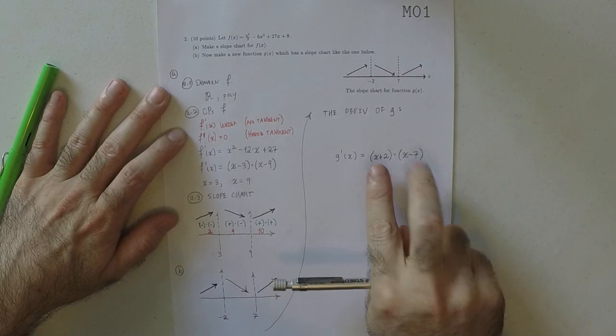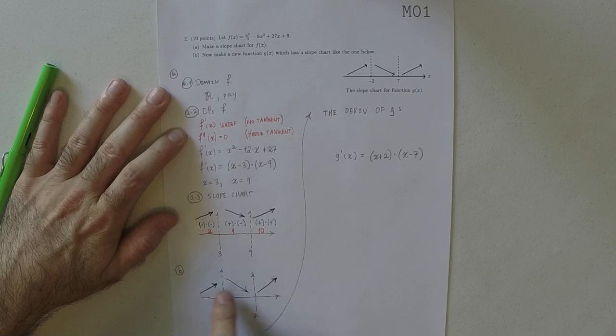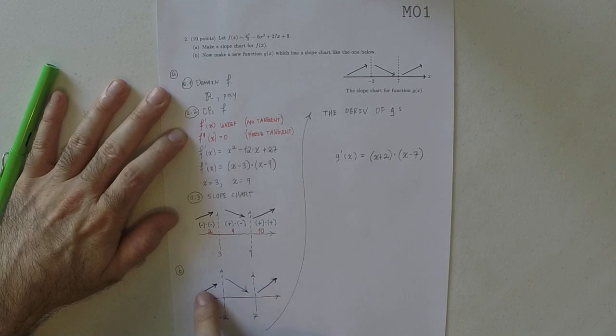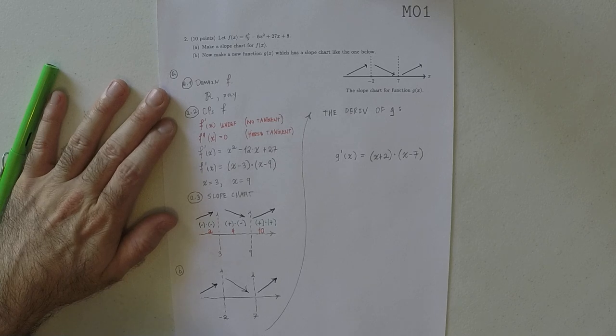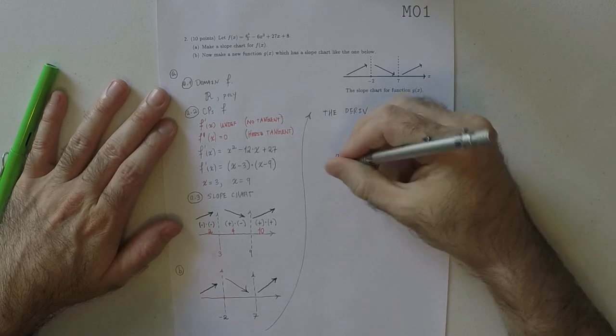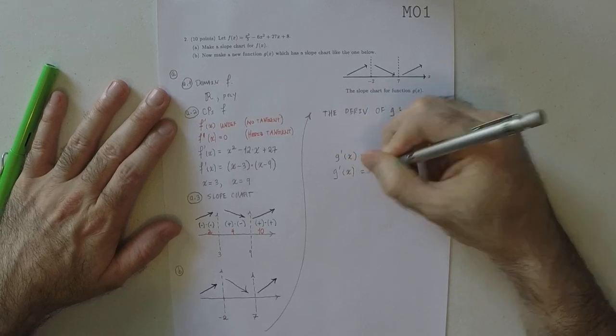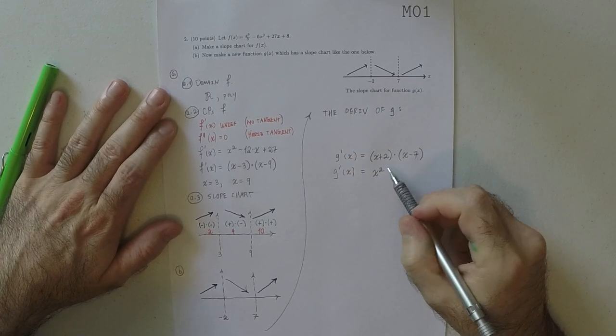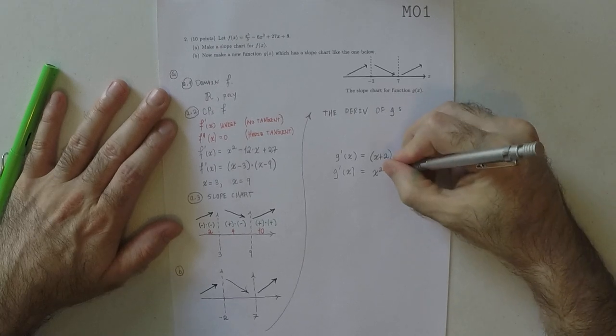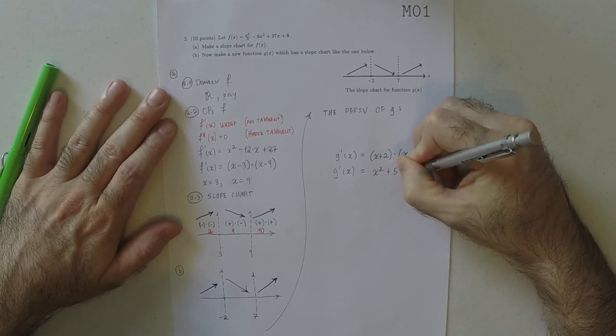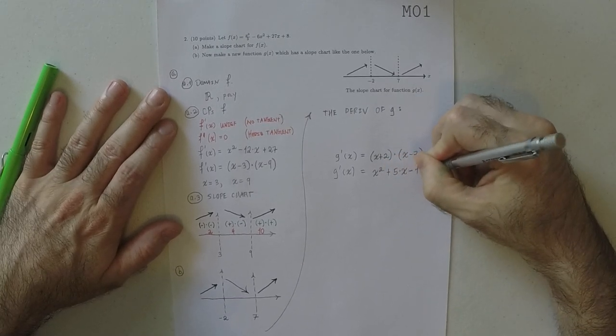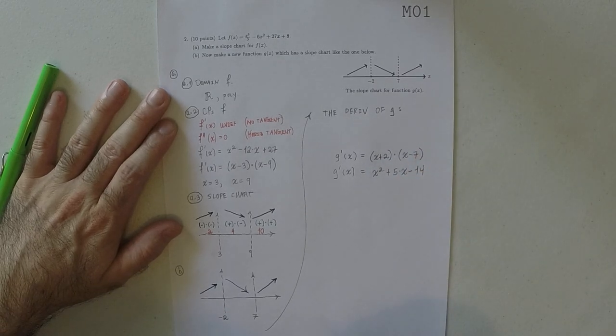Because that causes the derivative to be 0 at the required places, and it also makes the sign of the derivative be what we want. So, that means that, simplifying this, the derivative of g would be x squared, and then plus 5x minus 14. That's multiplying out and collecting like terms.